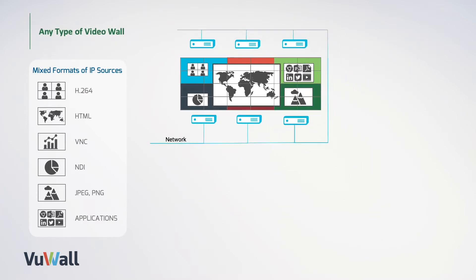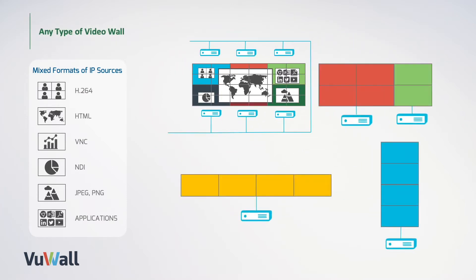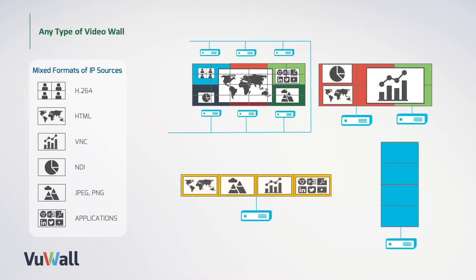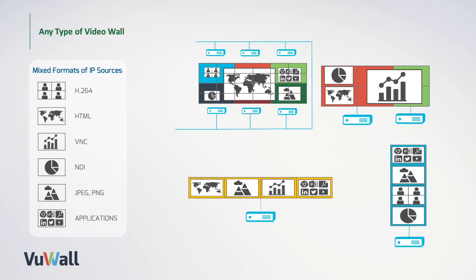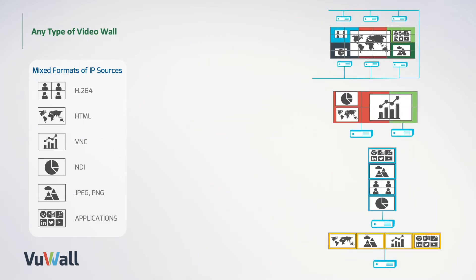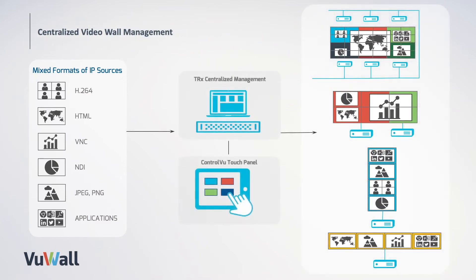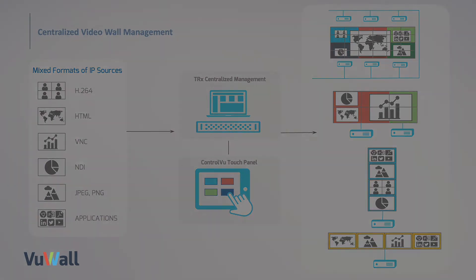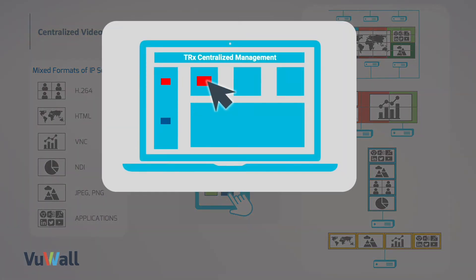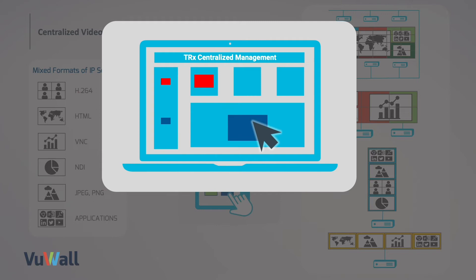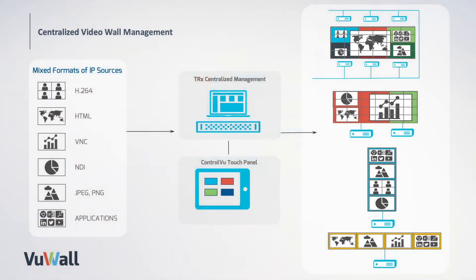With PAC, you can power any type of video wall, despite the aspect ratio. And like all ViewWall devices, PAC nodes are managed by the TRX Centralized Management Software platform, where you can configure and manage all your video walls from a single easy-to-use drag-and-drop interface.